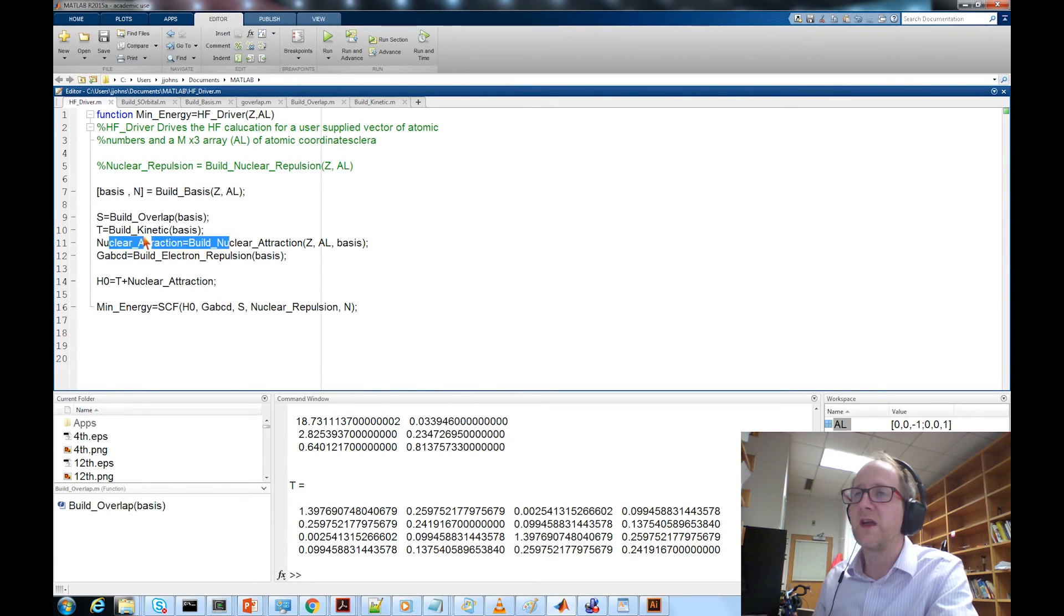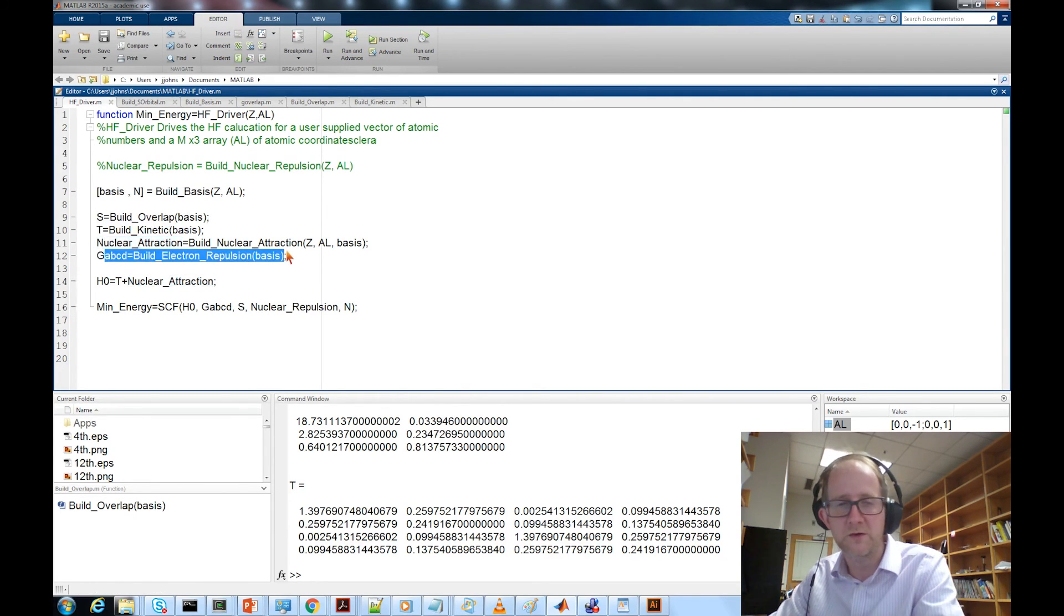If we go back and look at our Hartree-Fock driver program, we notice the next two steps are build nuclear attraction and then build the four-centered electron-electron repulsion integrals. Those have similar forms we're going to need to compute. So we're going to devote an entire set of videos, video set four, to figuring out how to deal with the Coulomb operator, which breaks the symmetry that we have in x, y, and z. We'll figure out how to evaluate that in the next set of videos. Hope to see you then. Bye.